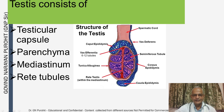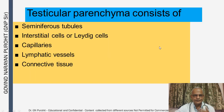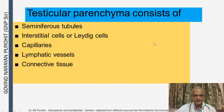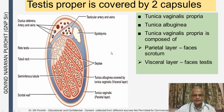The caput epididymis and testicular parenchyma consist of the seminiferous tubules, interstitial cells or Leydig cells, capillaries, lymphatic vessels, and connective tissue.